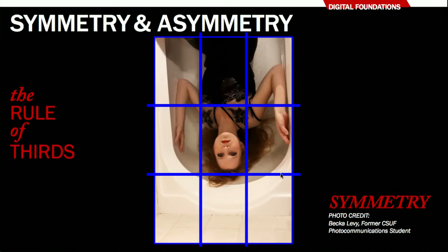The rule of thirds accounts for the idea that in a photographic image we want most of the activity to happen where these lines intersect. This symmetric image sort of breaks the rule by placing the most important component right in the center grid. Generally we don't want the most important thing in the centered cell, but in a symmetric image that rule of thirds can be broken.